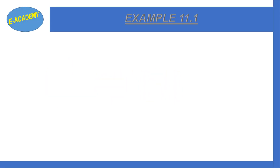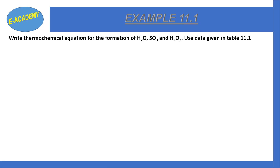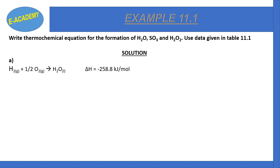Example 11.1: Write thermochemical equations for the formation of H₂O, SO₃, and H₂O₂ using data given in table 11.1. Part A: the equation for the formation of water is H₂ + ½O₂ → H₂O, and delta H = −285.8 kJ per mole.